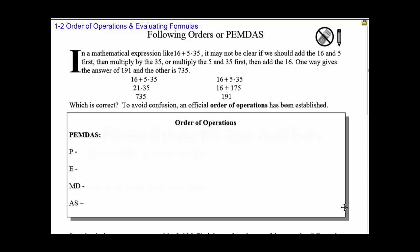In the first example that we have with 16 plus 5 times 35, it may not be clear whether we want to add the 16 and the 5 and then multiply the 35, or multiply the 5 and the 35 and then add the 16. To avoid confusion, we actually use the order of operations, we use what's called PEMDAS.